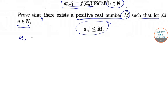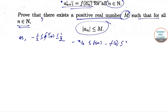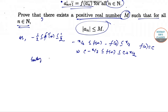Since -1/2 ≤ f'(x) ≤ 1/2, integrating from 0 to x we get -x/2 ≤ f(x) - f(0) ≤ x/2. Taking f(0) = c as the constant, we get c - x/2 ≤ f(x) ≤ c + x/2.